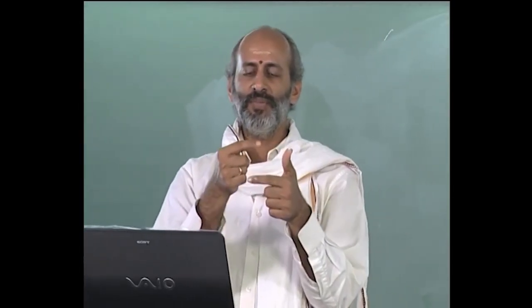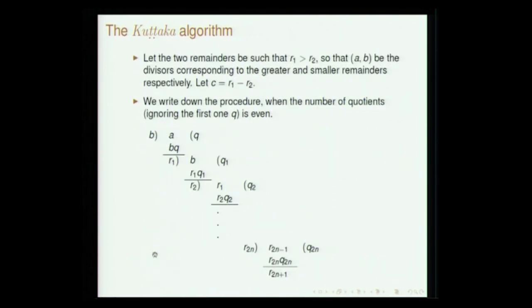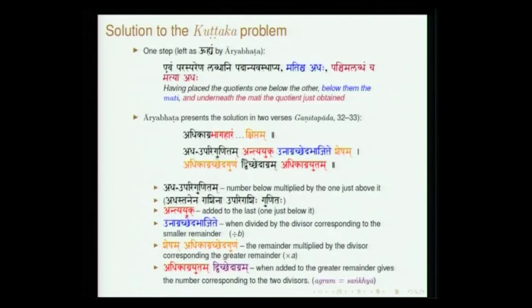So at this stage, you take the product of t and q_{2n} — this is adhaha uparigunitam — multiply, and then add whatever is below it. Adhaha uparigunitam antiyyuk — add the antiyya. Unagra cheda bhajite shesham — this has to be divided by b. Unagra is the smaller remainder. Both a and b are referred to as chedas in the sense of the main problem — in that problem, both are divisors and you have to find x and y.